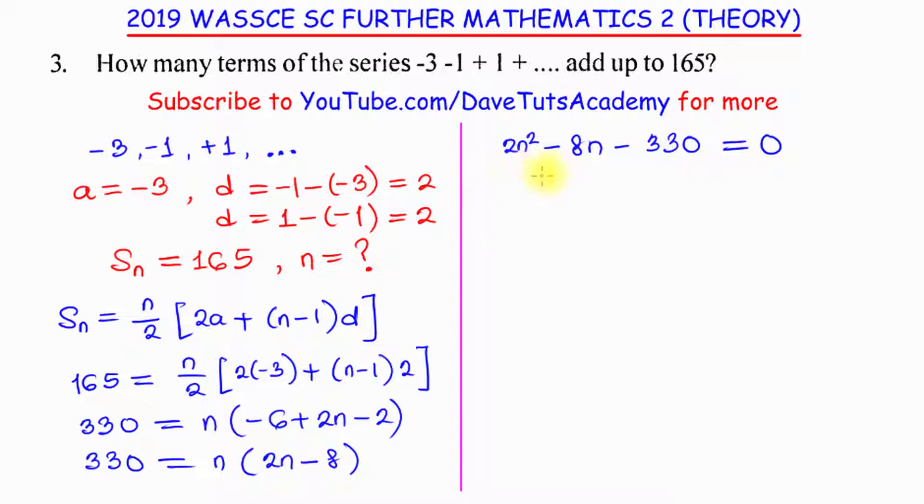Now, this is looking like a quadratic equation, but we can simplify further by dividing each of the entries by 2. So, if I do that, I will have this beautiful quadratic equation as n square minus 4n minus 330 over 2. 2 in 3 is 1, 2 in 13 is 6 and 2 in 10 is 5.